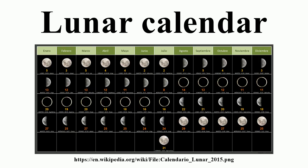It is used mainly for religious purposes, but in Saudi Arabia it is the official calendar. Other lunar calendars often include extra months added occasionally to synchronize with the solar calendar. The oldest known lunar calendar was found in Scotland at Warren Field and dates back to around 8000 BC.